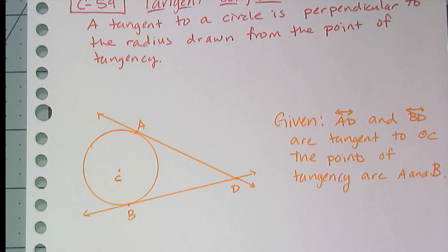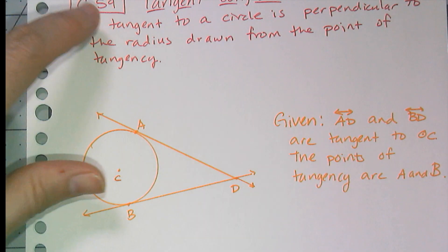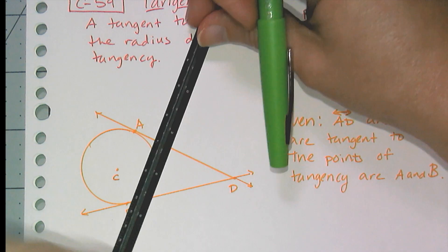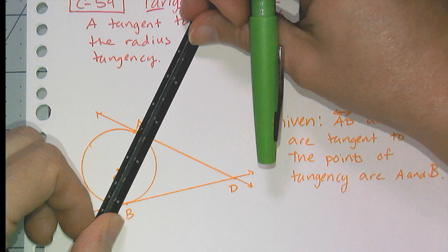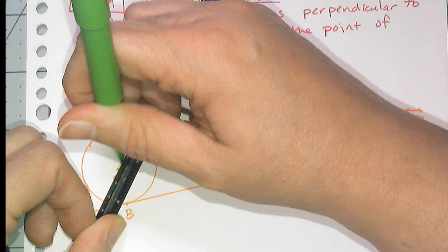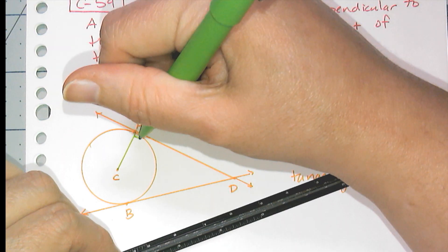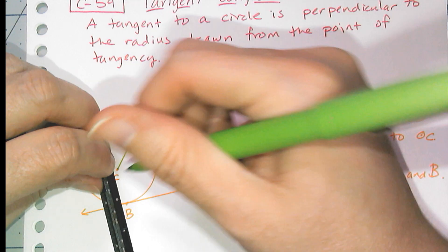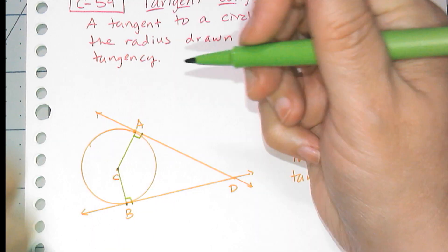Conjecture 59 tells me that the radius that I draw to those points of tangency have to form right angles with a tangent. So those have to be 90 degree angles.